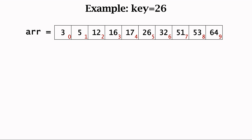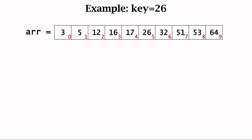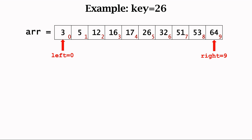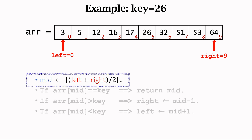I use this example to demonstrate binary search. The key is 26. The program is asked to find 26 in the array and return its index. Two pointers, left and right, respectively point to the front and the back. Now the left is 0 and the right is 9. The variable mid is the average of the left and the right positions — mid points to the middle. The average of 0 and 9 is 4, so mid is equal to 4. It points to the fourth element of the array, which is 17.